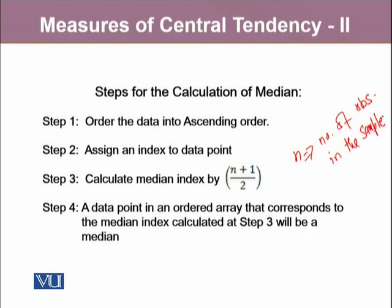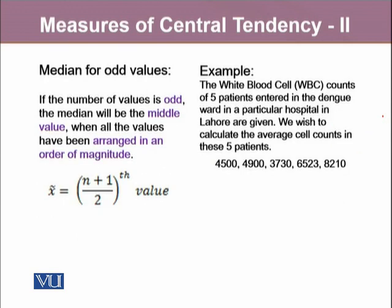A data point in an ordered array that corresponds to the median index calculated at step 3 will be a median value. Median for odd values is obtained by arranging the data and calculating n plus 1 by 2th value. You will be able to find a unique value that goes right in the middle, which is not the case with even data size.